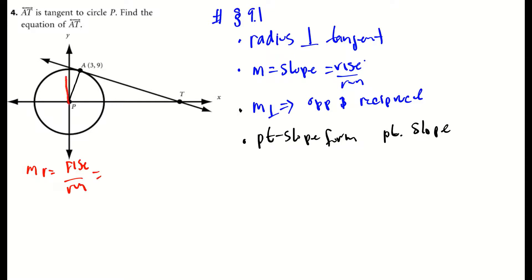We went up nine units, and then we went to the right, or run is three. That means that the slope of the radius is three over one.